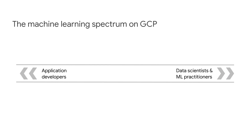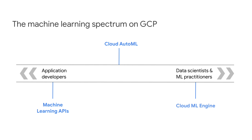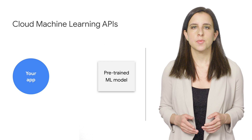The talk covered three of our cloud machine learning products: machine learning APIs, AutoML, and ML Engine. Let's get a quick taste of each section, starting with machine learning APIs.